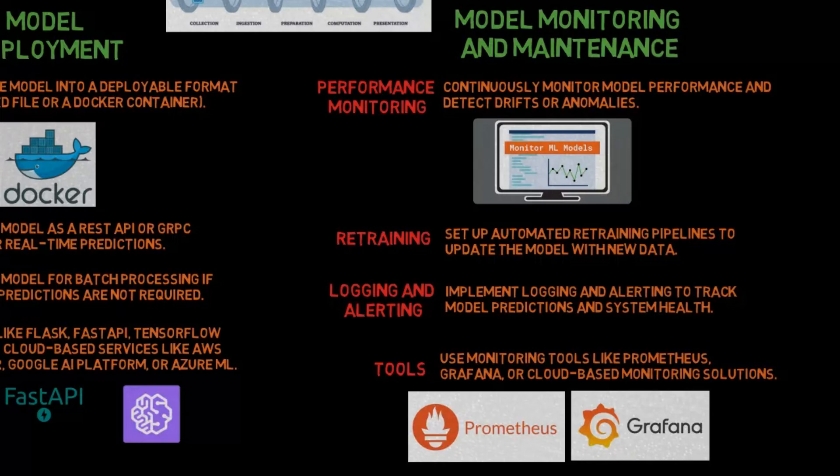Integrating an ML model into a data pipeline involves a series of well-defined steps, leveraging a variety of tools and frameworks at each stage. The key is to ensure smooth transitions between data ingestion, pre-processing, feature engineering, model training, validation, deployment, and monitoring, often requiring orchestration tools to manage and automate the workflow.